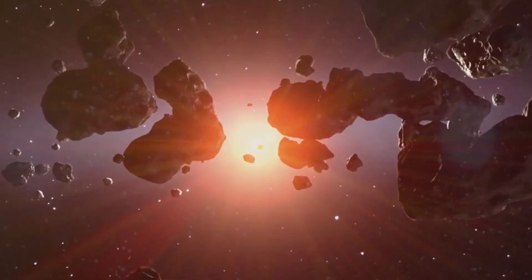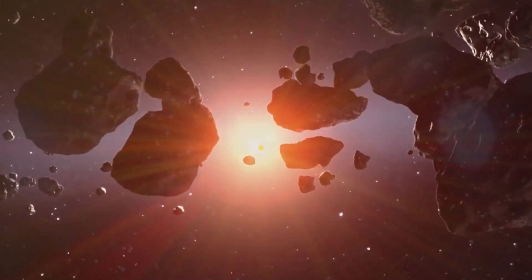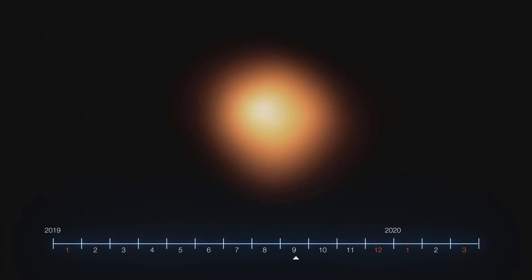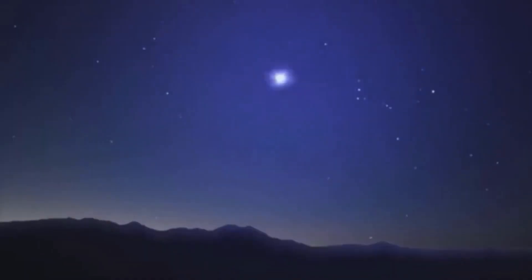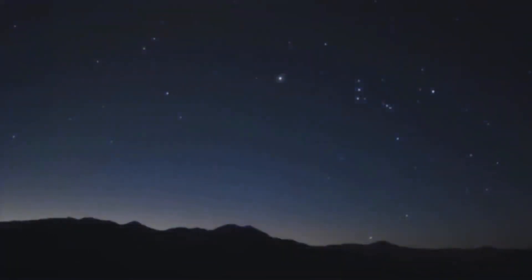But why does this matter to us here on Earth? Because a supernova this close would be unlike anything we've ever seen. It wouldn't just light up the night sky. It could shine as brightly as the full moon during the day, casting eerie shadows and turning our world into a perpetual twilight spectacle.